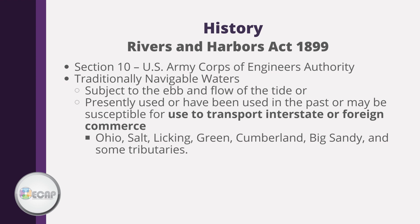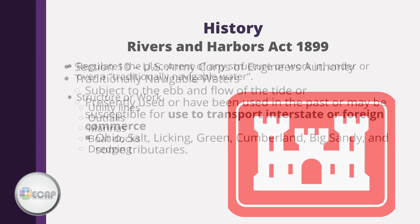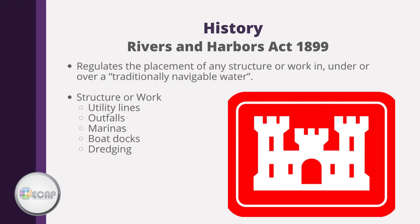Examples of Kentucky navigable waterways, as recognized by the Corps of Engineers, include the Ohio, Salt, Licking, Green, Cumberland, Big Sandy rivers, and some tributaries. The Rivers and Harbors Act regulates the placement of any structure or work in, under, or over a traditionally navigable water, giving the Corps of Engineers authority over construction, excavation, or deposition of materials into navigable waters.